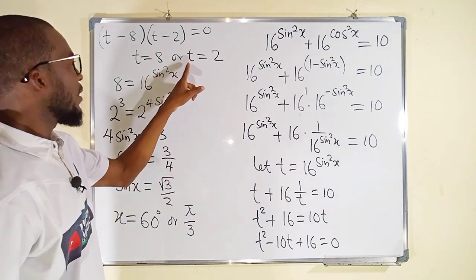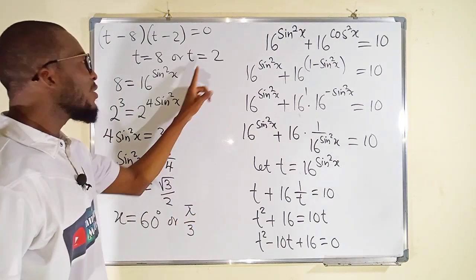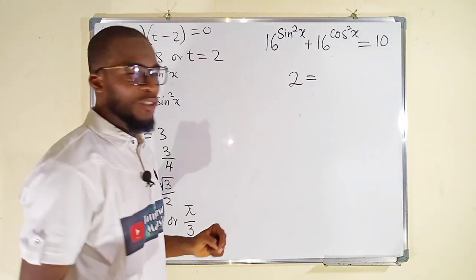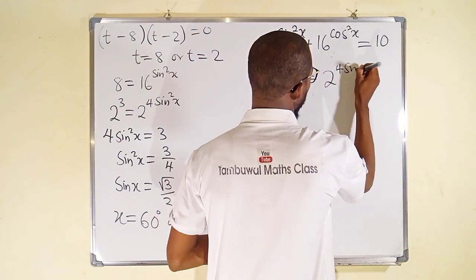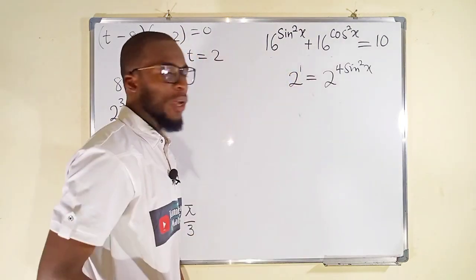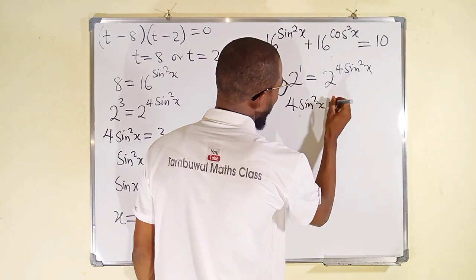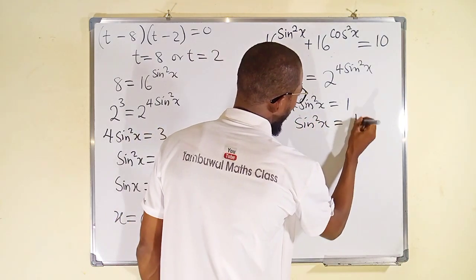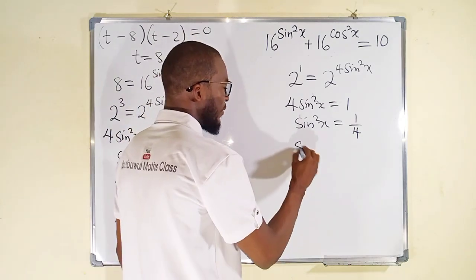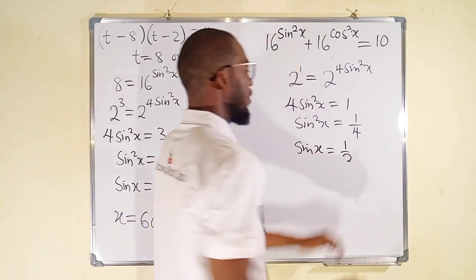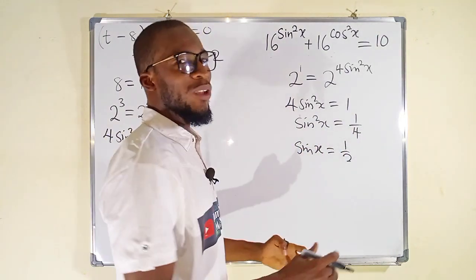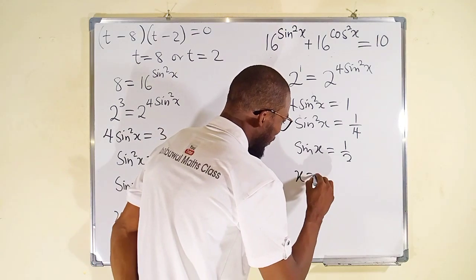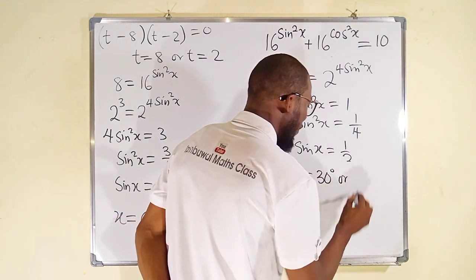Now for the case where t is equal to 2. When t equals 2, recall t is 16 raised to the power of sine squared x, which we can write as 2 to the power of 4 sine squared x. Since 2 has a power of 1, 4 sine squared x equals 1. Dividing both sides by 4, sine squared x equals 1 over 4. Taking the square root of both sides, sine x equals 1 over 2, because the square root of 1 is 1 and the square root of 4 is 2. This is a special case because sine 30° equals 1 over 2, so x is equal to 30 degrees, or pi over 6 in radians.